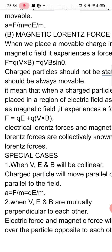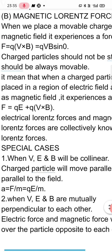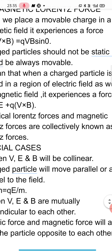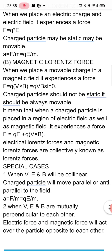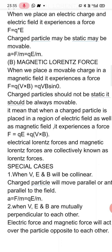Now let us consider some special cases. We have three vectors: the velocity of the charged particle, the electric field, and the magnetic field — all three are vector quantities. The first case is when V, E, and B are collinear, meaning they all lie along the same line and point along the same direction. In this case, the charged particle will move either parallel or anti-parallel to the field.